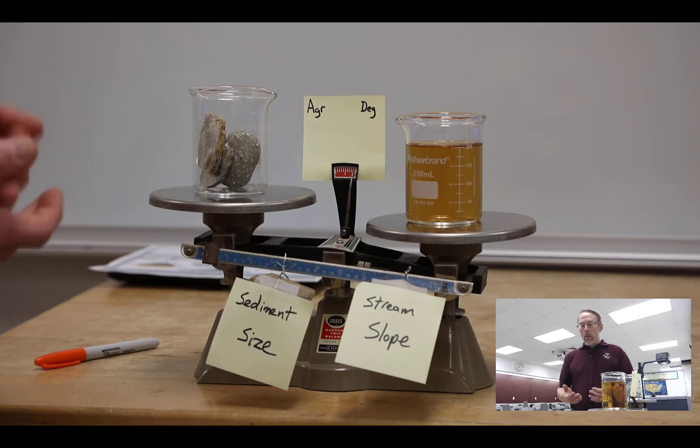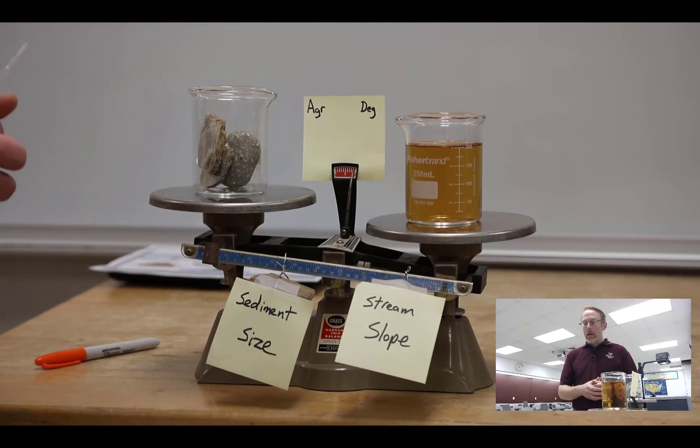Smaller sediments take less energy to erode, so we'll be able to use that available energy to erode more, which will incise the channel.